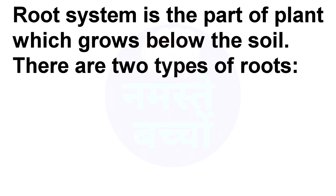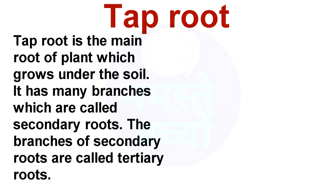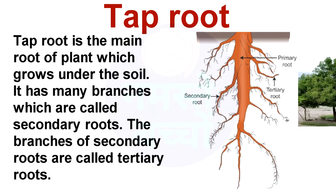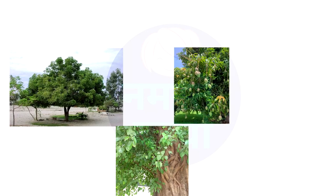The root system is the part of a plant which grows below the soil. There are two types of roots: taproot and fibrous root. Taproot is the main root of the plant which grows under the soil. It has many branches which are called secondary roots. The branches of secondary roots are called tertiary roots.